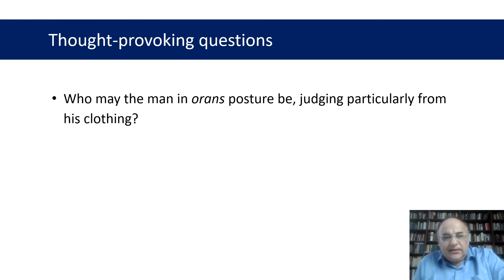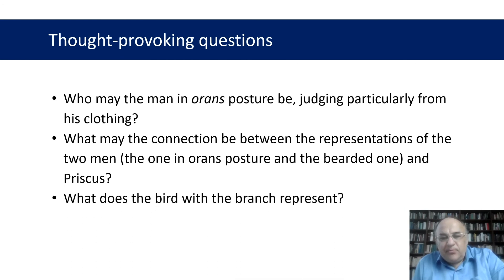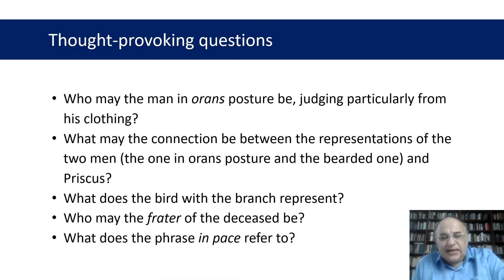My first question is: who may the man in orans posture be, judging particularly from his clothing? The second one: what may the connection be between the representations of the two men — the one in orans posture and the bearded one — and Priscus? What does the bird with the branch represent? Who may the frater of the deceased be? What does the phrase in Pace refer to? Thank you very much for your attention.